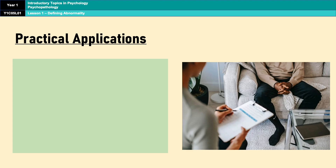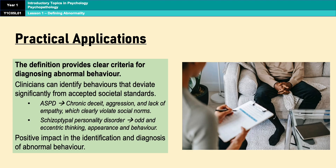A strength of deviation from social norms is its practical use in diagnosing abnormal behaviour. Individuals with ASPD exhibit behaviours such as chronic deceit, aggression, and a lack of empathy, which clearly violates social norms and can be identified by professionals. Additionally, when diagnosing conditions such as schizotypal personality disorder, professionals often use terms like 'odd' and 'eccentric' to describe people's thinking, appearance, and behaviour — terms that are defined by what is considered normal in a society, and cannot be quantified like in statistical infrequency. Being able to identify these violations enables professionals to make diagnoses and ensure individuals receive appropriate treatment and support.